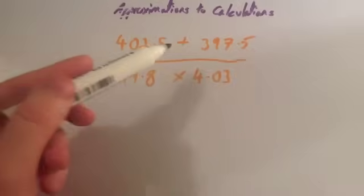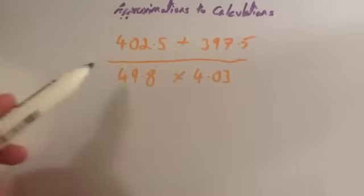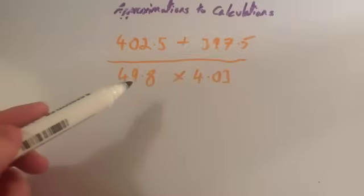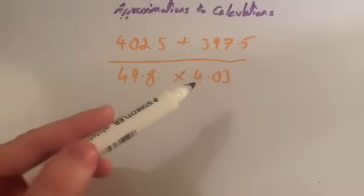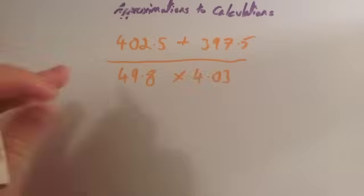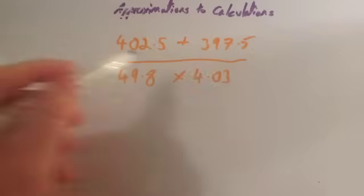We can also approximate this calculation: 402.5 plus 397.5 divided by 49.8 multiplied by 4.03. I would always round these numbers to one significant figure to begin with.